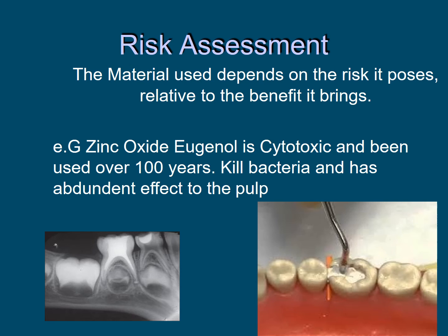Basically, risk assessment is whether or not a material can be used, and this depends on the risk it imposes relative to the benefit it brings. For example, zinc oxide eugenol cements have been used for over 100 years, yet eugenol would not pass the cytotoxicity test. Nevertheless, it is an effective temporary filling because of its ability to kill bacteria. However, if it is allowed to make contact with the pulp, the effect would be devastating, since it carries the risk of killing the pulp.